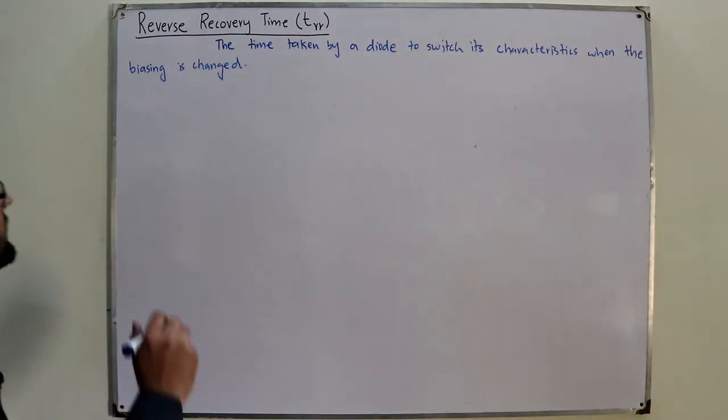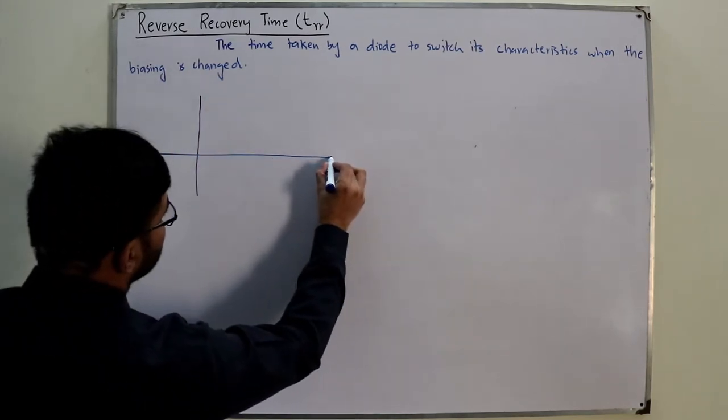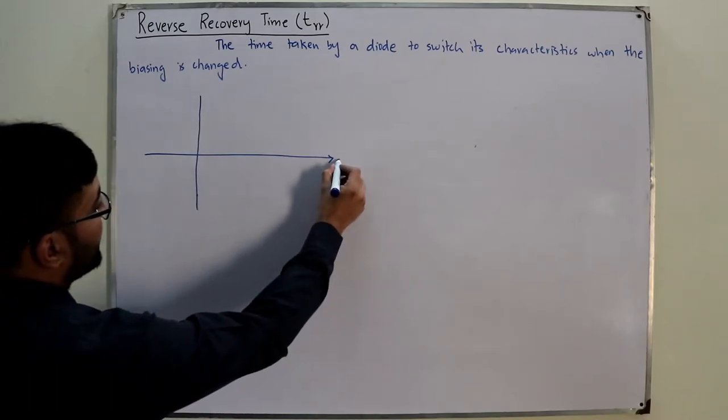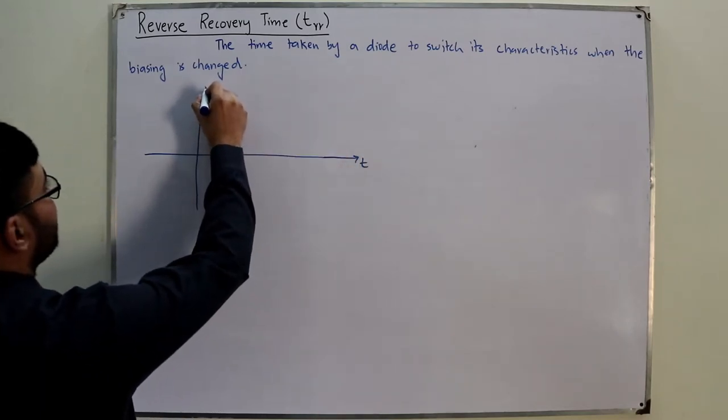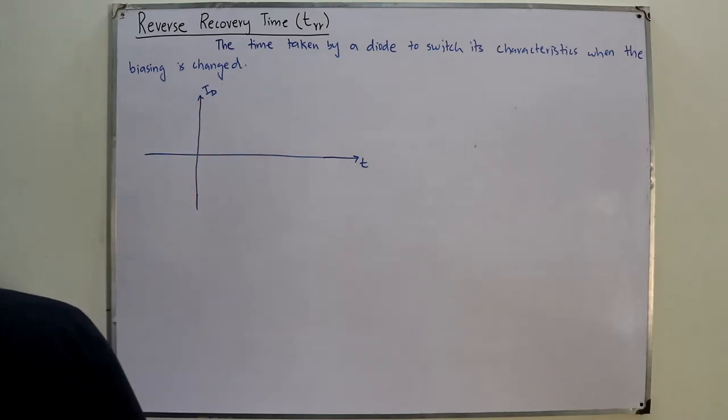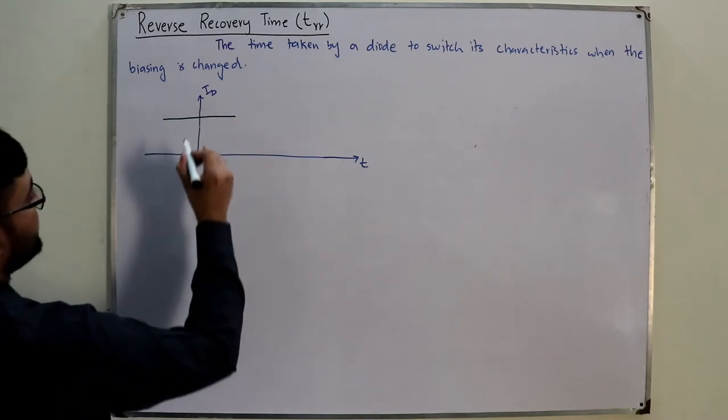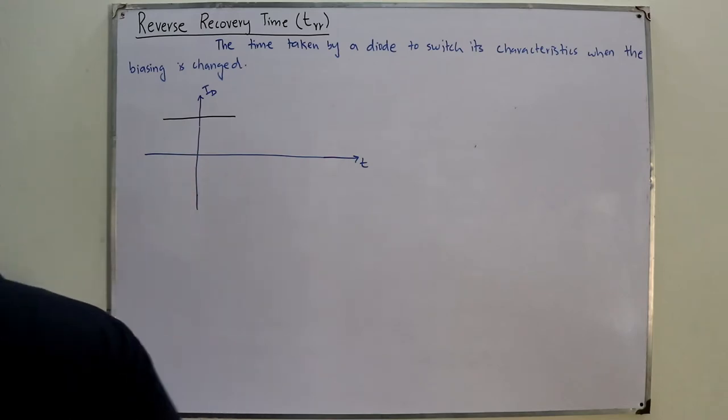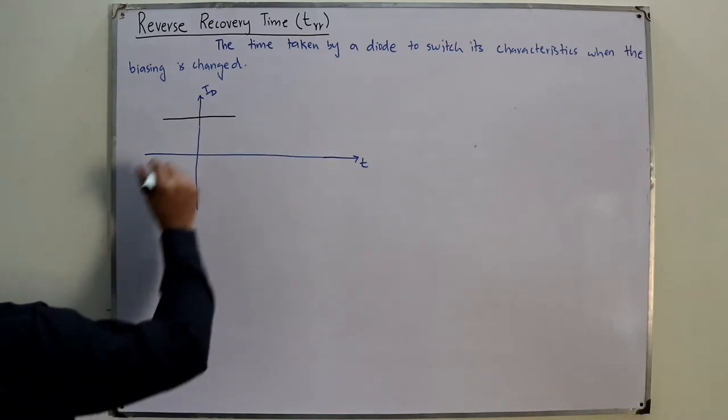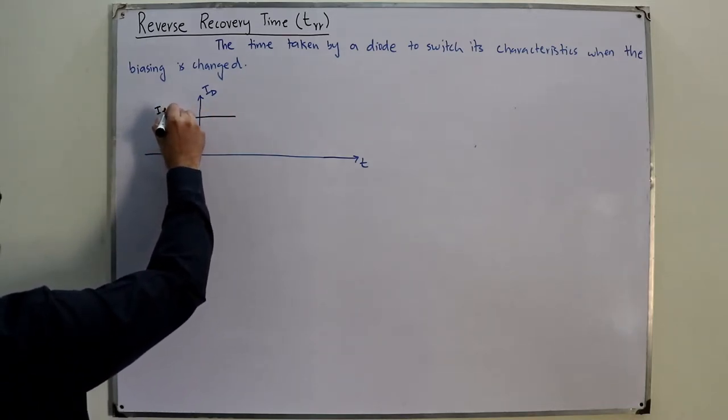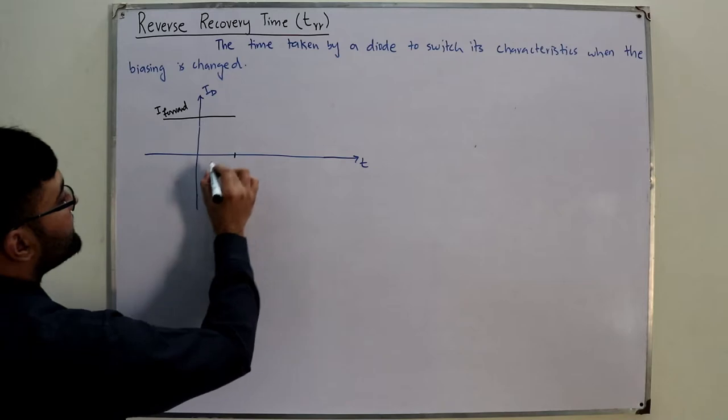If the vertical axis is representing the current through a diode and this horizontal axis is representing the time axis, what do we have? This was, let's say, initially the current, the initial current was this, which is your I forward. This is I forward. This is when the diode is forward biased. Now at this instant of time, T is equal to T1.